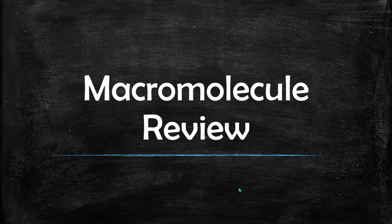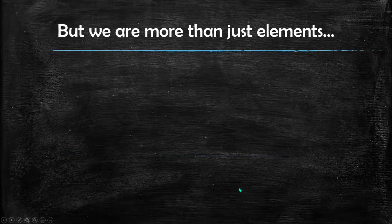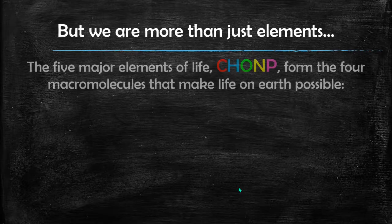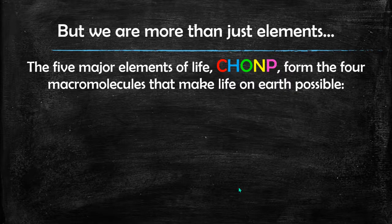In this video, we're going to review macromolecules, all four of them. When we think about our large molecules that make up life on Earth, they're made from five main elements: carbon, hydrogen, oxygen, nitrogen, and phosphorus.